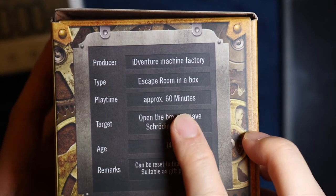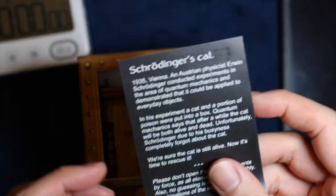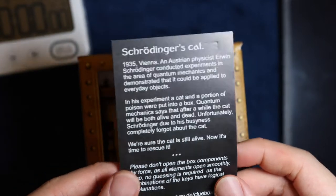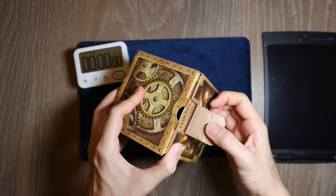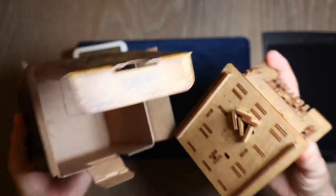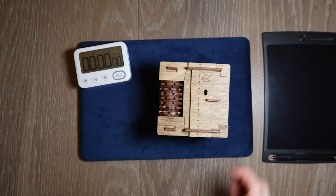This should take me around 60 minutes and it has a backstory about Schrodinger's cat, the Austrian scientist. So you can pause it and read it just now. We'll quickly open the box and see what's in the box.